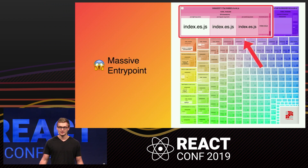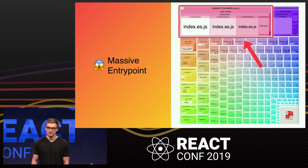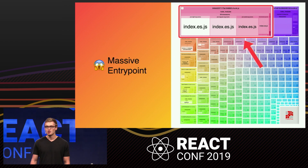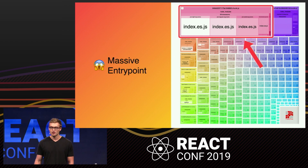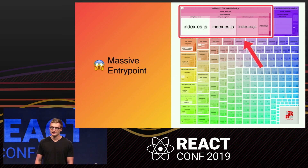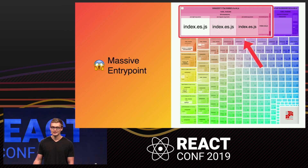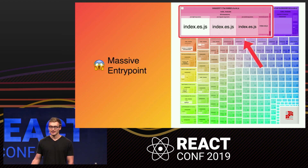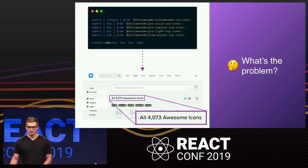After fixing those dependencies, it became clear the vast majority of these packages were within the @fortawesome scope — the scope for all of the Font Awesome icon library packages we're currently depending on for many of our icons. This consists mainly of four packages: regular, light, solid, and brand icon styles for the varying uses.